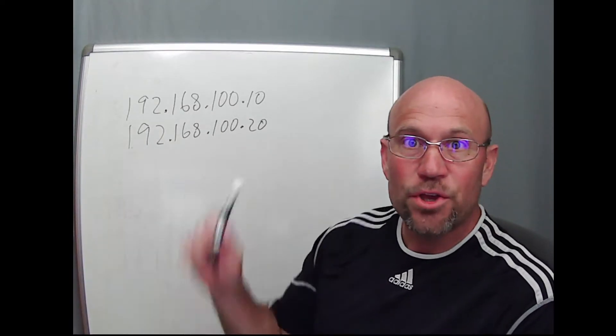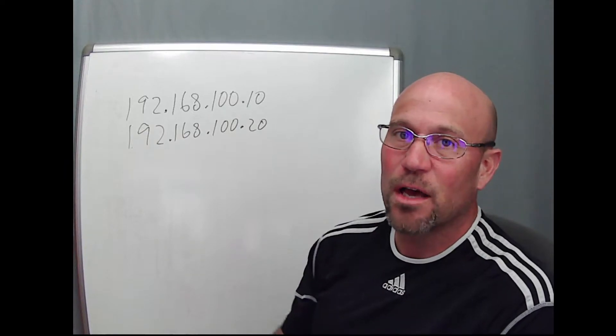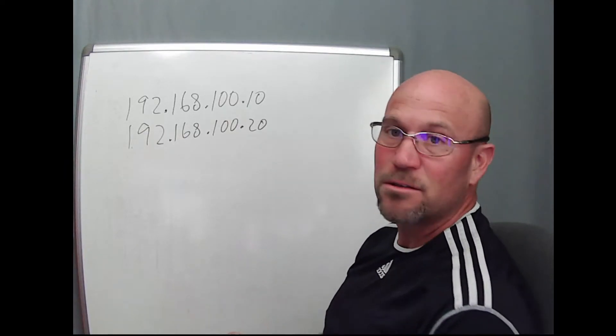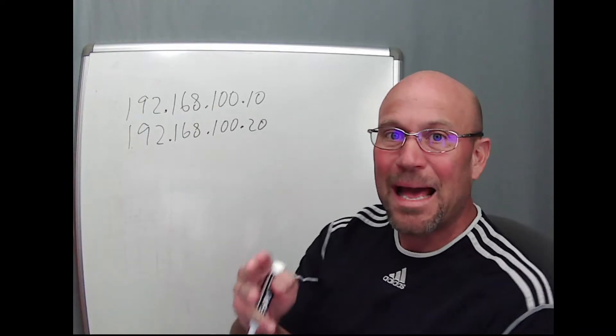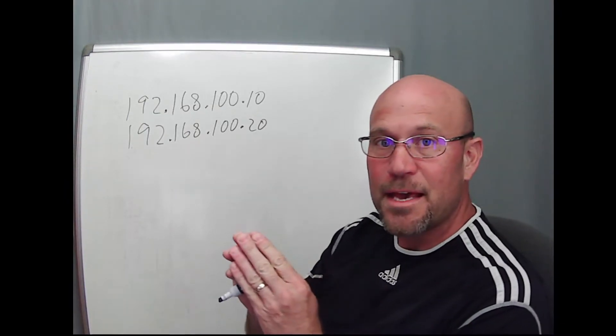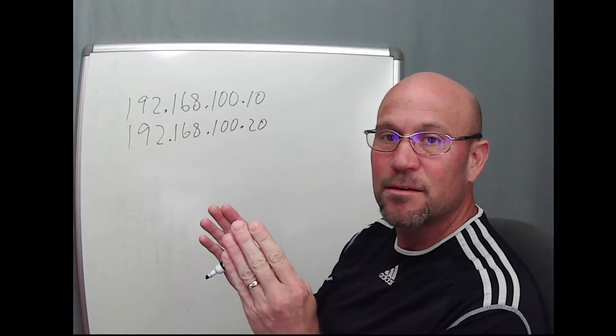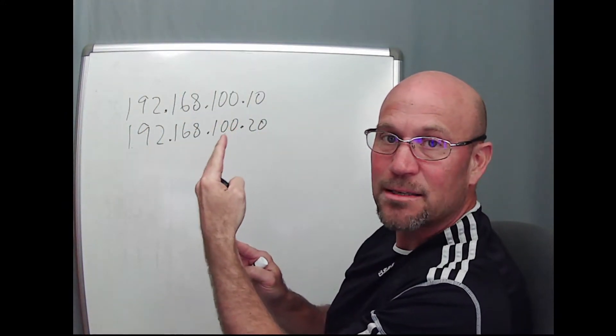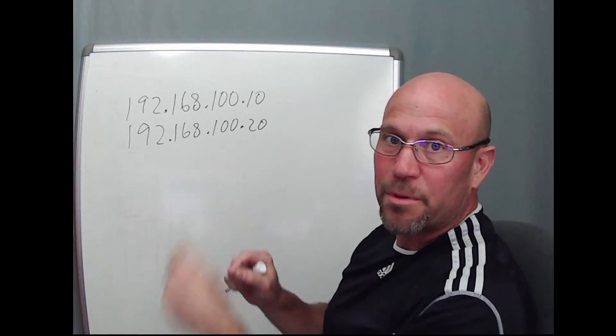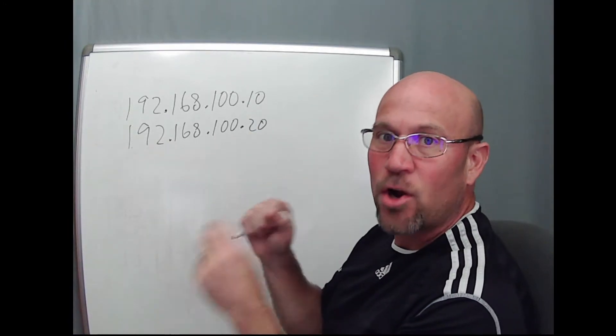So we have two IP addresses here. You cannot know what subnet these are on without the respective masks. Don't let anybody tell you otherwise. You've got to have the mask because the mask tells you the contiguous bits, beginning from the far left, extending to the end of the mask, that are network bits. The others after that are host bits.